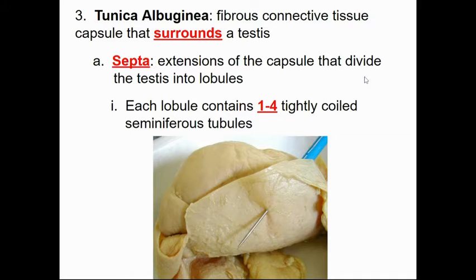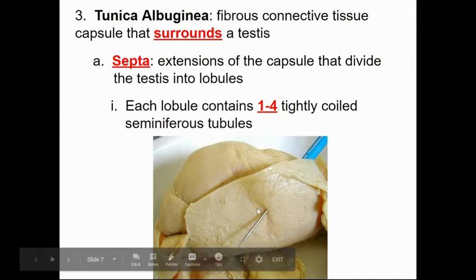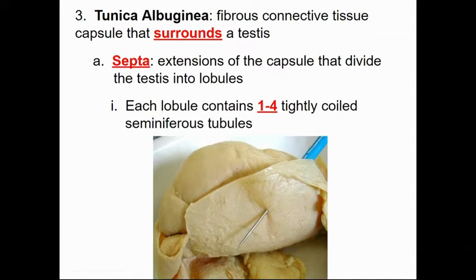The tunica albuginea is a fibrous connective tissue that surrounds each testis. It protrudes into the testis and divides it up into segments called septa — think about the septum of the heart or the septum of your nose as a division. In each of those segments you have lobules, and a lobule will have one to four sets of tightly coiled tubes called seminiferous tubules.